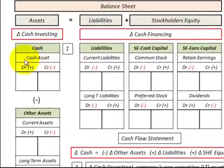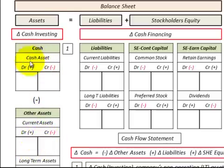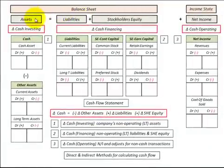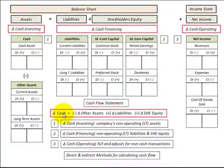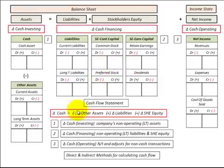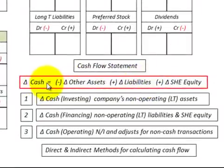For calculating our cash flows, I've set up a cash account here as a separate account. I've done that by taking our total assets and subtracting out all the other assets, and that leaves us the cash account. Then of course we have the balance sheet where assets equal liabilities plus stockholders' equity, and our income statement accounts. We're going to be using this formula — the change in cash equals minus the change in all the other assets, plus our change in liabilities, plus our change in stockholders' equity — to determine our cash flows.